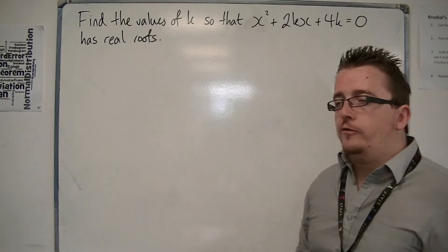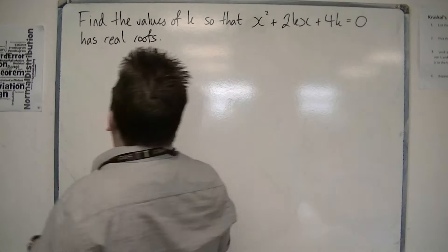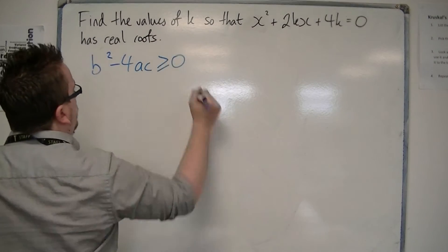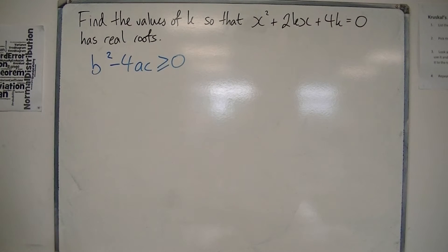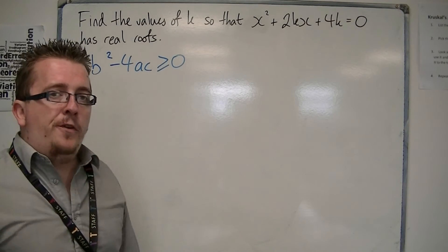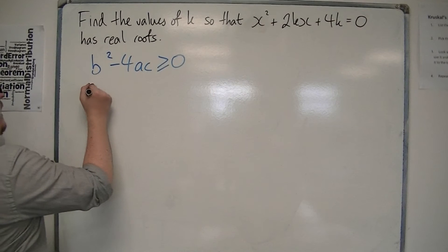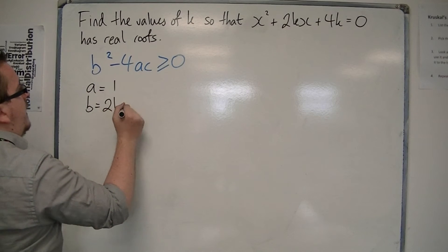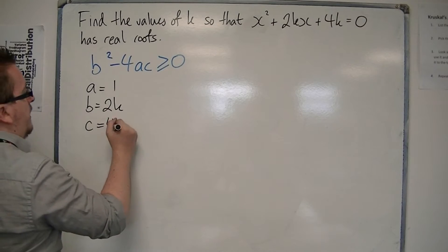And because we're looking for real roots, the discriminant b squared minus 4ac must be greater than or equal to 0. So what we need to do is identify a, b and c. a is 1, b is 2k, and c is 4k.